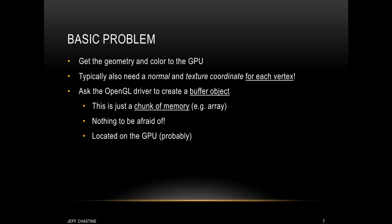So here's the basic problem — how do we get all of this information onto our graphics card? Realize that in addition to its position, each vertex typically has a normal and a texture coordinate associated with it. So we need to find a way to put that information onto the GPU and organize it in a meaningful way. To begin with, what we're going to do is create something called a buffer object. Realize that this is just a chunk of memory, it's very similar to an array, and it's nothing to be afraid of. This buffer object can be located in a couple of different places, but for now we're just going to leave it on the GPU.